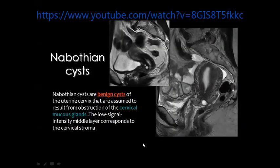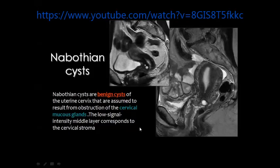One of the incidental findings we may encounter is small cysts in the uterine cervix, known as Nabothian cysts. They are retention cysts in the cervical mucus glands, benign, containing fluid or mucus. They appear of bright signal on the T2-weighted image and are considered by many an incidental finding.